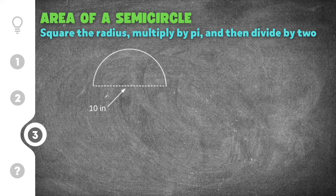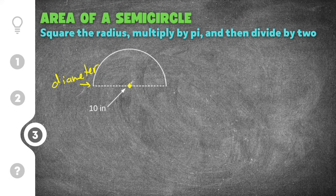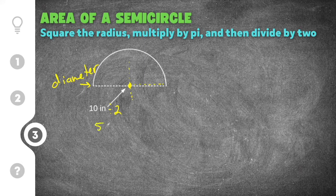Our last practice problem gives us a semicircle with a dotted line that runs the entire length of the semicircle — that makes it the diameter. We have to convert it to radius. The radius starts in the middle and runs only to the edge, so it's one half of the diameter. Taking 10 inches and dividing by two gives us a radius of five inches.